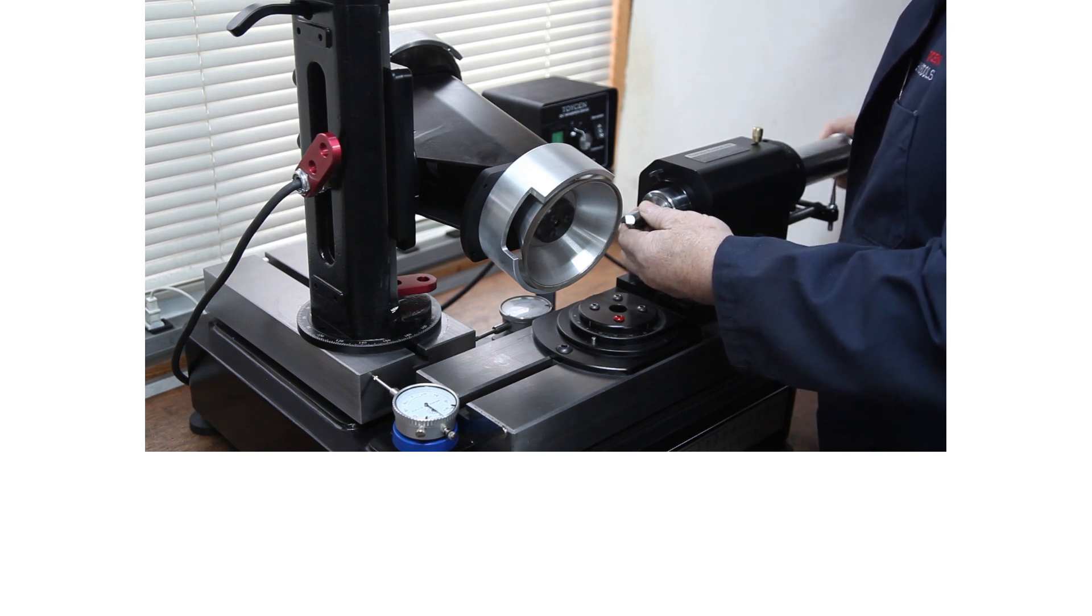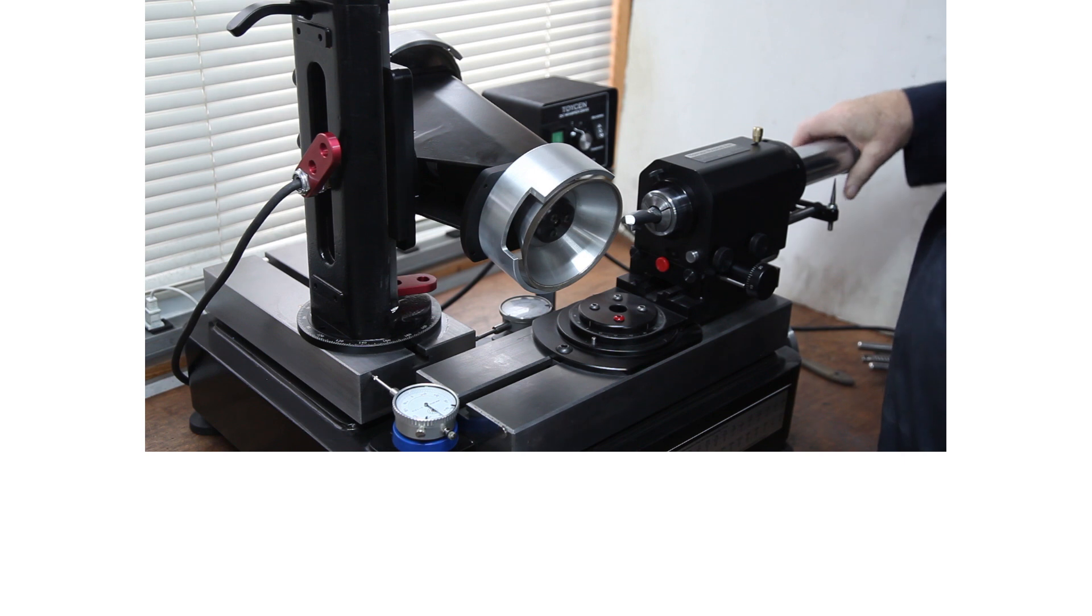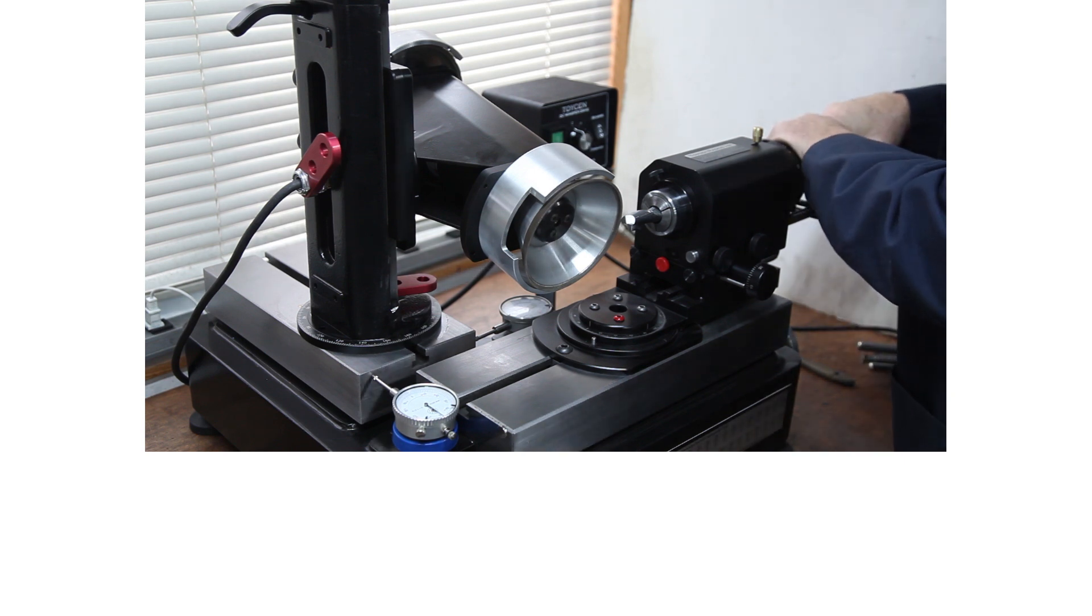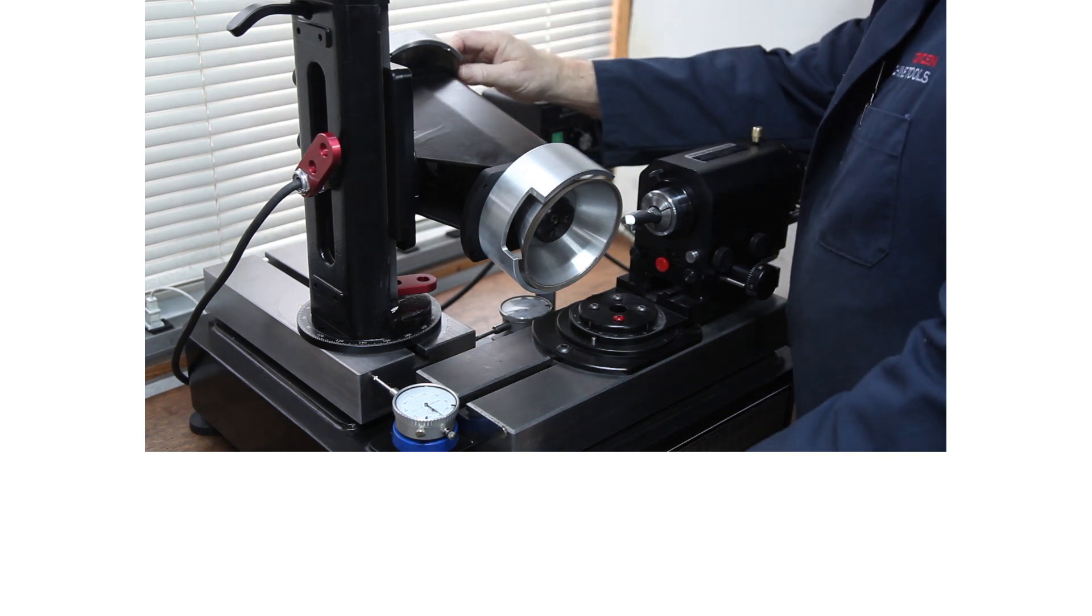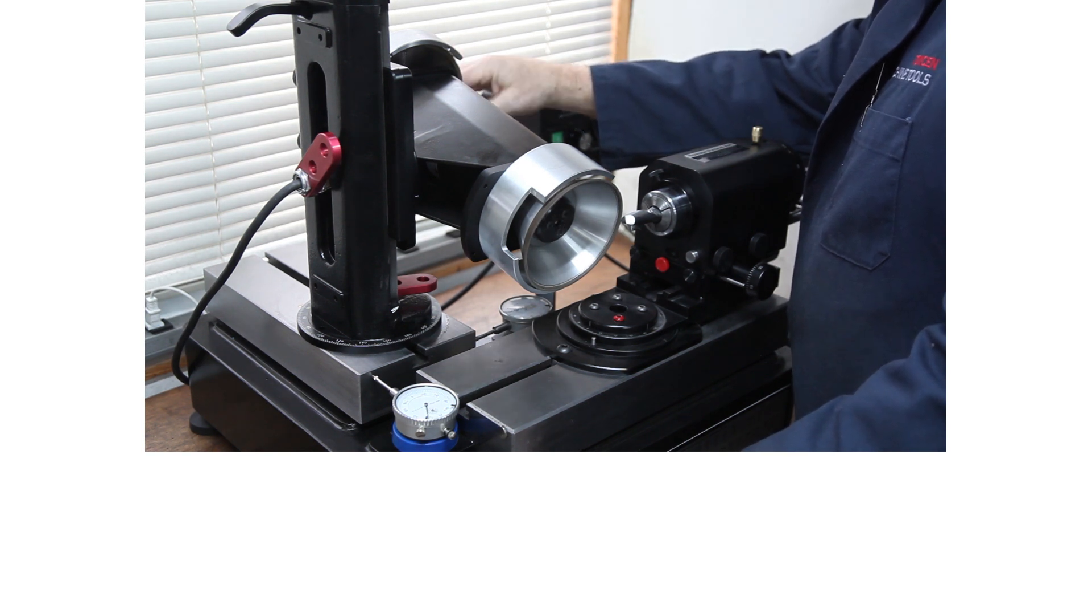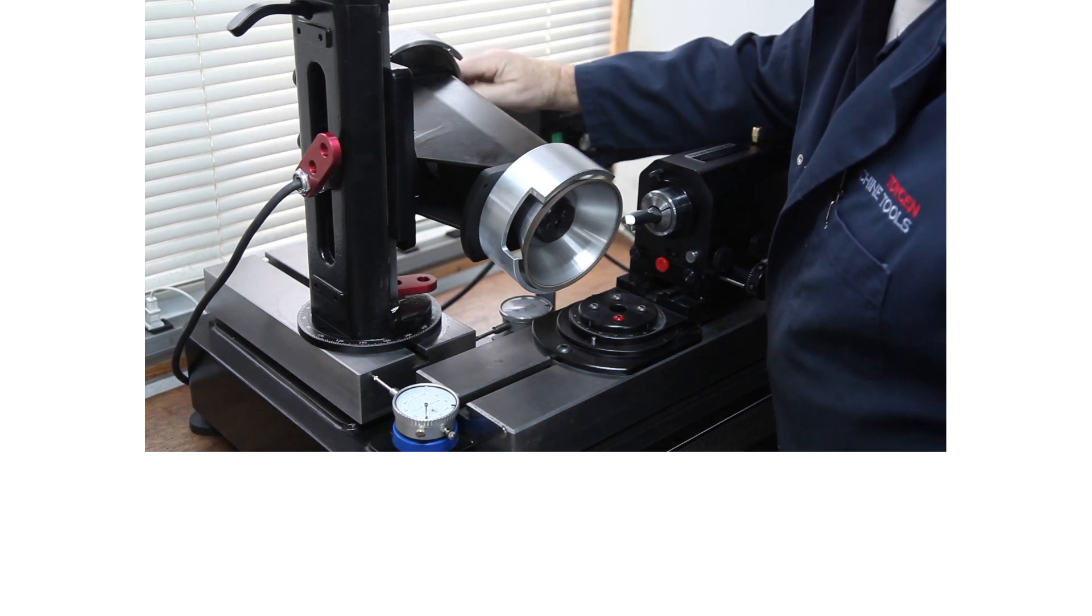And you're just going to bring it in almost a touch. In this case there's already a radius on there so it's a little hard to pick up the corner. It's much easier if you're starting from square. Just bring it in. You don't want to over cut the sides.